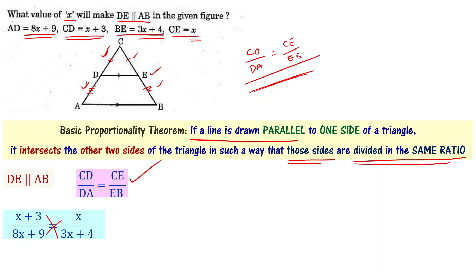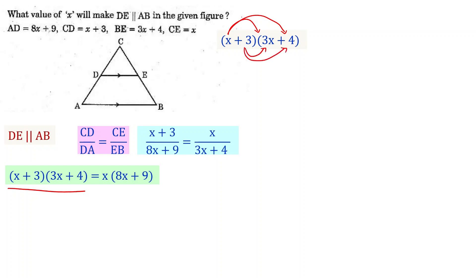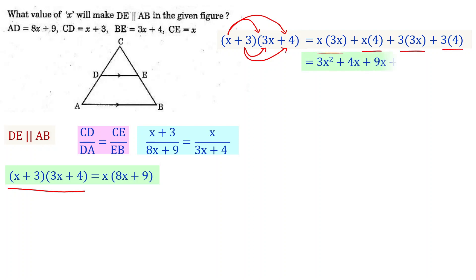Cross multiplying gives (x+3)(3x+4) = x(8x+9). Expanding the left side: x times 3x plus x times 4 plus 3 times 3x plus 3 times 4 equals 3x squared plus 4x plus 9x plus 12.